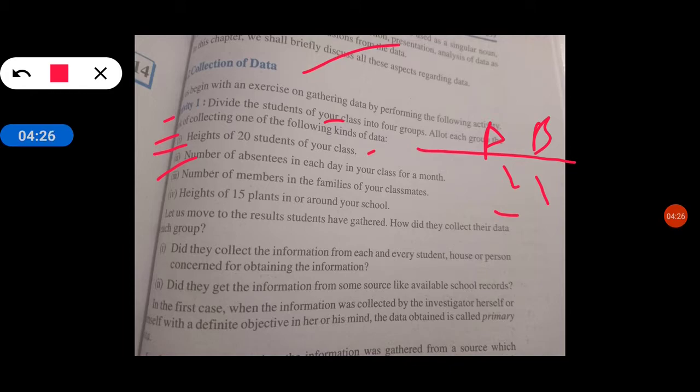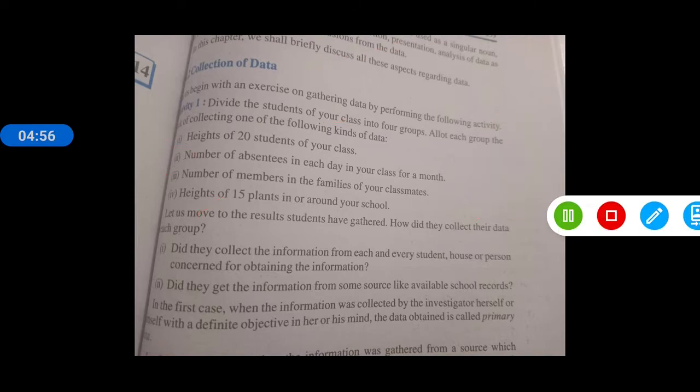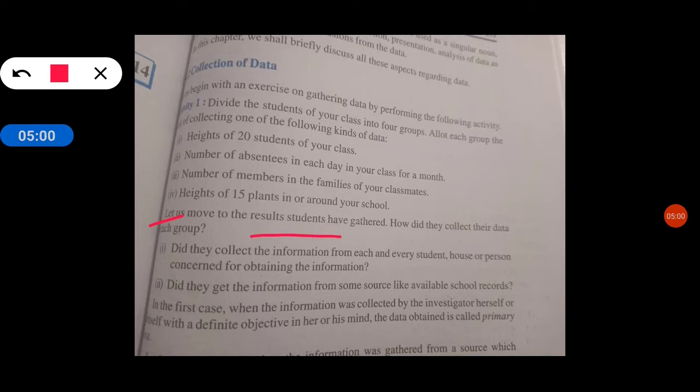Number of members in families of your classmates. Height of 15 plants in and around your school. Let us move to results. How did students gather data? How did they collect their data in each group? Collection of data: you have to understand that for example 20 students, we have to divide in a category.